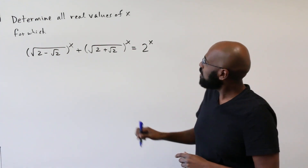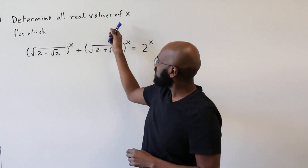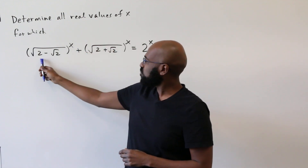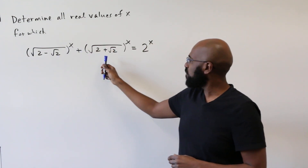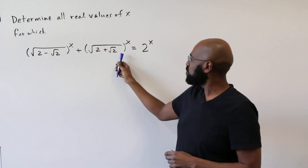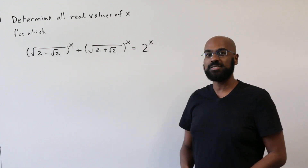So the problem asks to determine all real values of x for which the square root of (2 minus root 2) to the x plus the square root of (2 plus root 2) to the x equals 2 to the x.